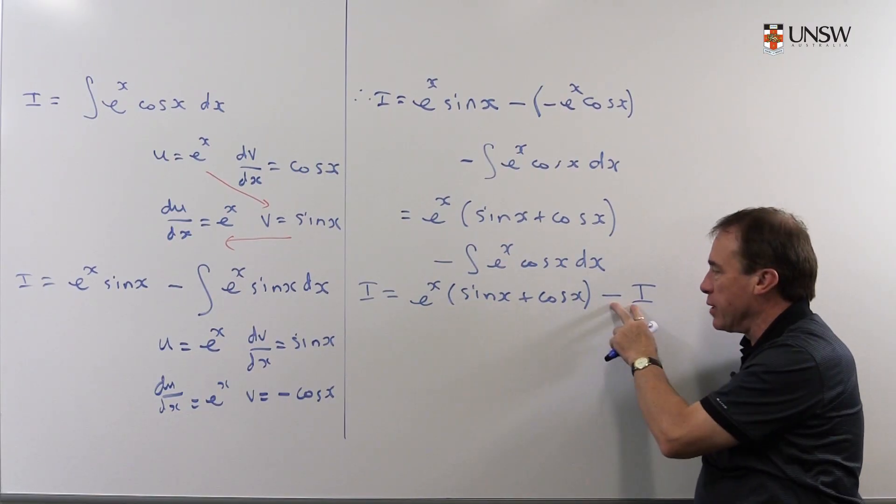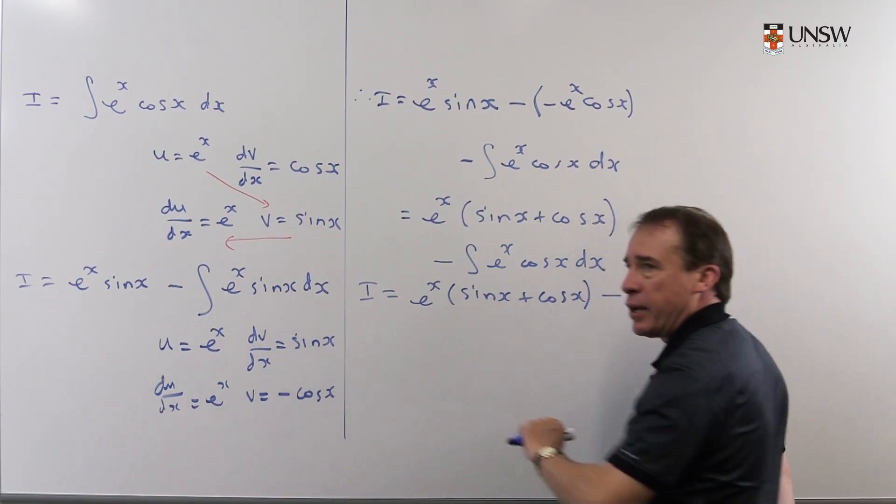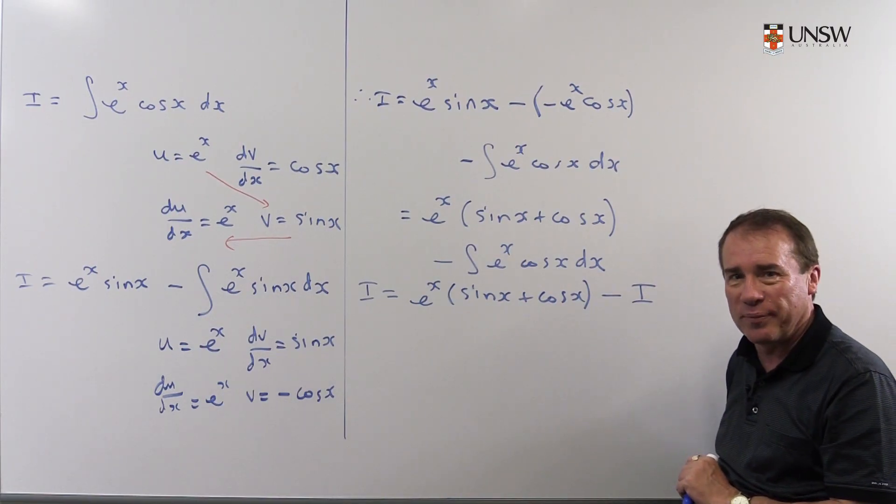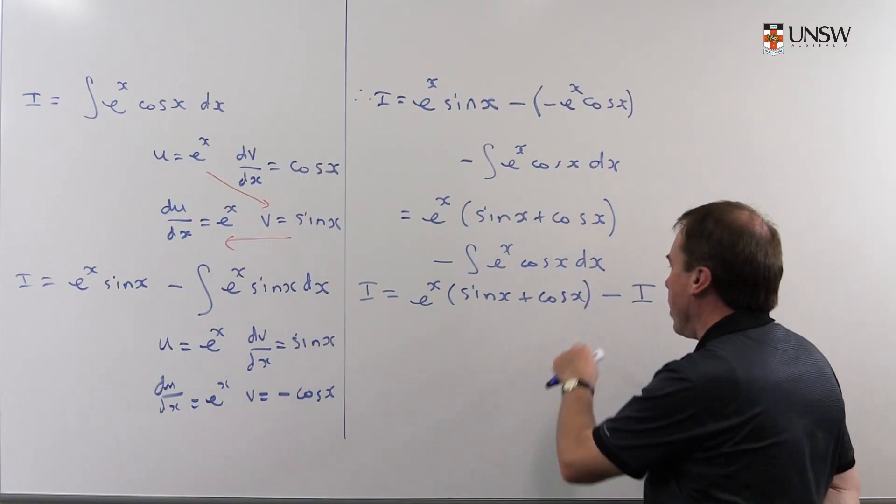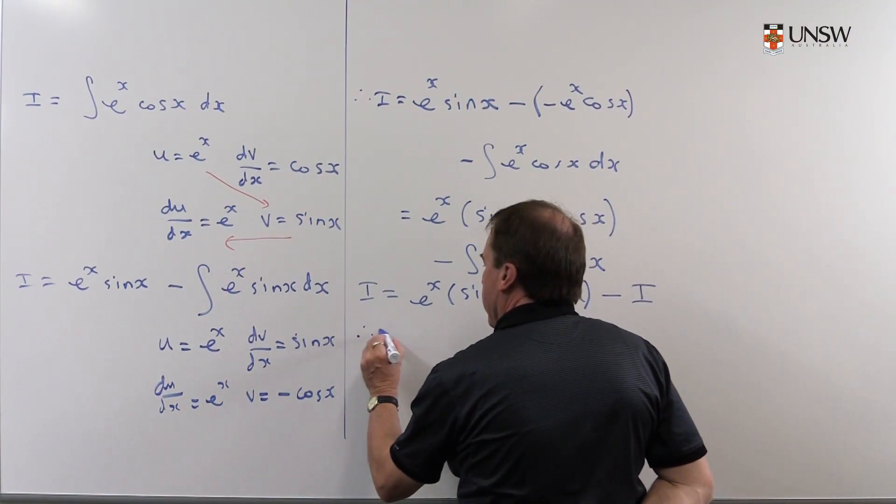And that's very clever because I can take that i on the other side and divide by 2. It's sort of like bootstrapping the problem. You end up back to where you start from, but there's a nice minus just where you want it.